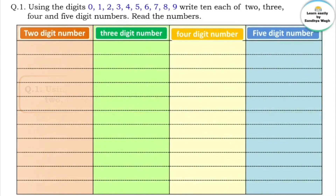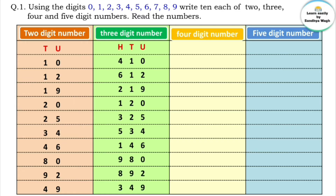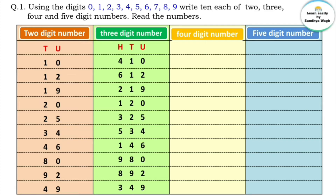Let's do that. First we will make three-digit numbers. The places are hundreds, tens, and units. The numbers are: 410, 612, 219, 120, 325, 534, 146, 980, 892, and 349.